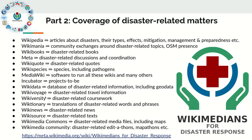Each project has its own information channel, and disaster-related matters follow the kind of information available through that channel. In Wikipedia, you might find articles about disasters, disaster types, their effects, mitigation and management measures, and disaster preparedness. On Wikimania there might be events discussing these topics or mapathons. In Wikibooks you can find books on related topics. The Wikimedia community coordinates this content through a community group called Wikimedians for Disaster Response.